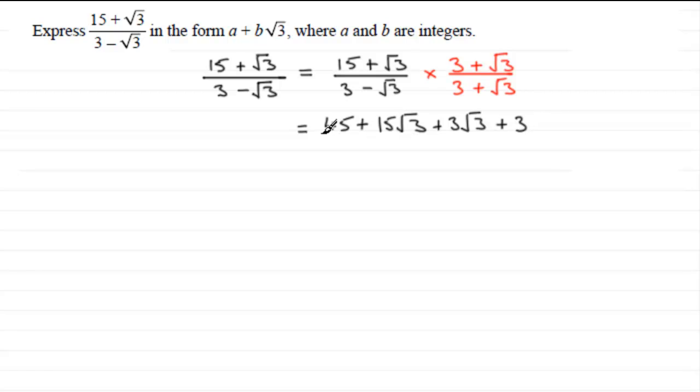And all of this is divided by - on the bottom here we multiply (3 - √3) with (3 + √3) so we get 3 times 3 which is 9, then 3 times plus √3 which is plus 3√3, now we do minus √3 times each of those two terms so minus √3 times 3 is minus 3√3, and then minus √3 times plus √3 is minus the root of 9 or minus 3.